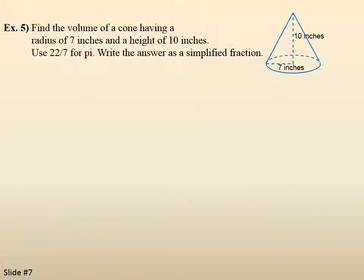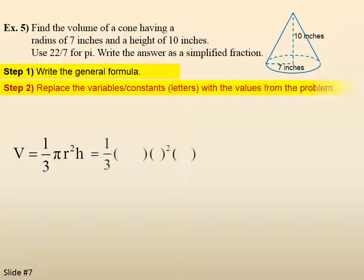Example 5. Find the volume of a cone having a radius of 7 inches and a height of 10 inches. Use 22 over 7 for pi. Write answer as a simplified fraction. Step 1. Write the general formula. 1 third pi r squared h. So now we're going to put the letters, put the values in for the letters. Pi we're given as 22 over 7. The radius is 7. And the height is 10.